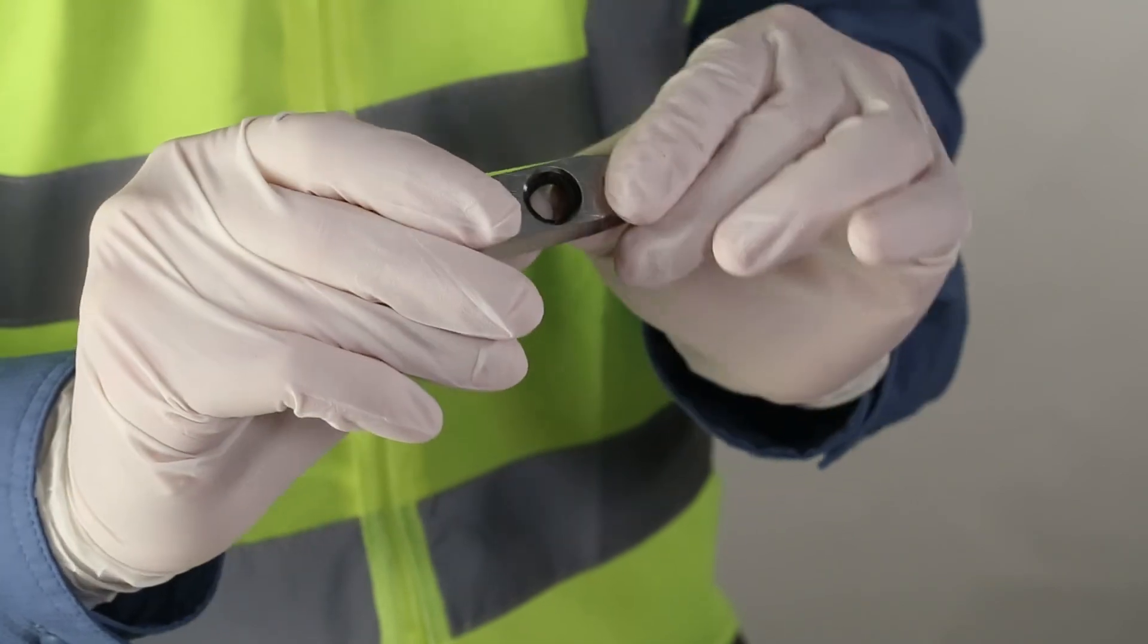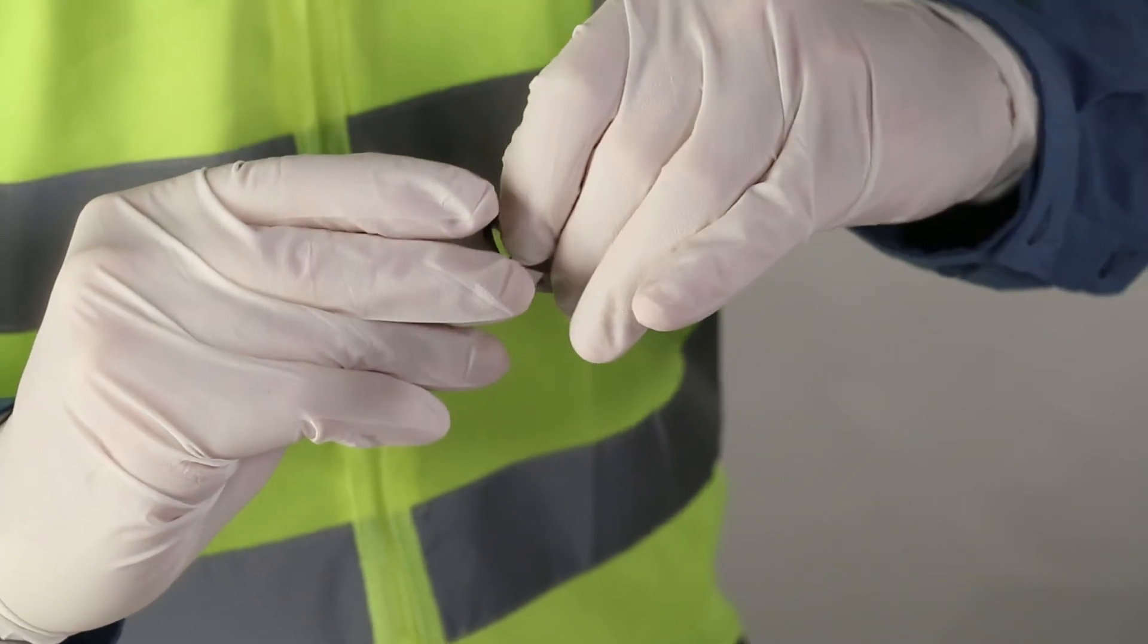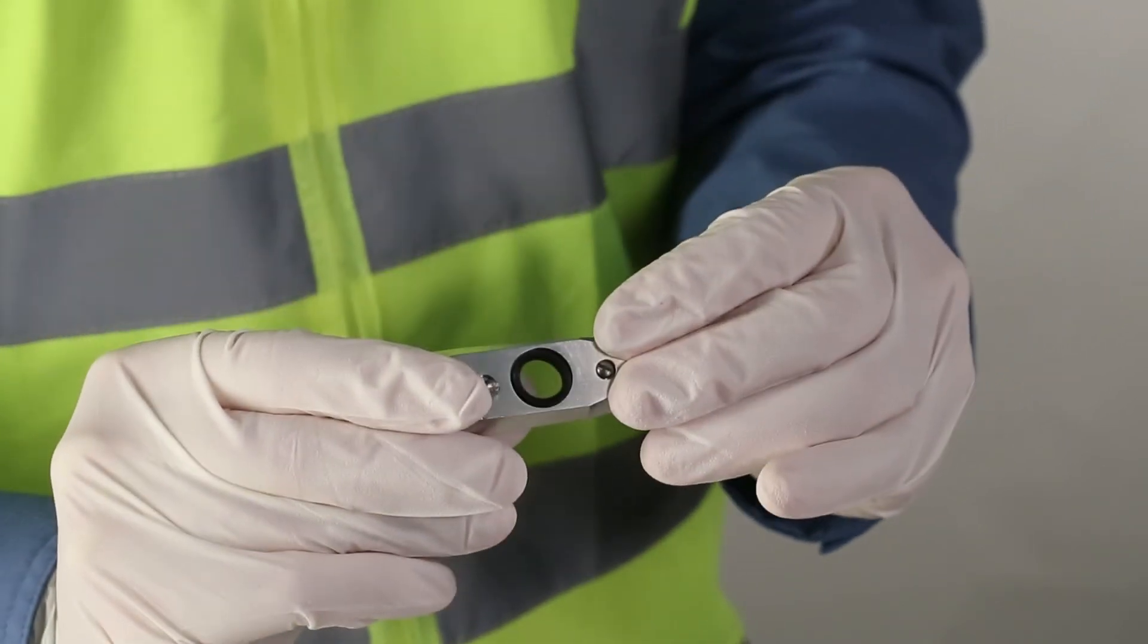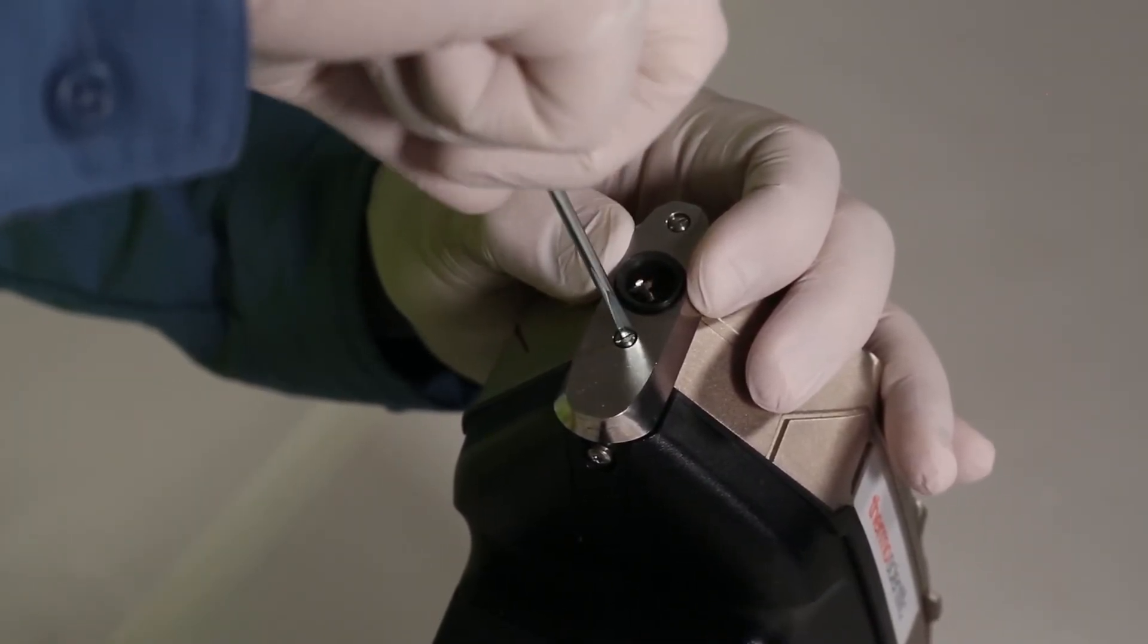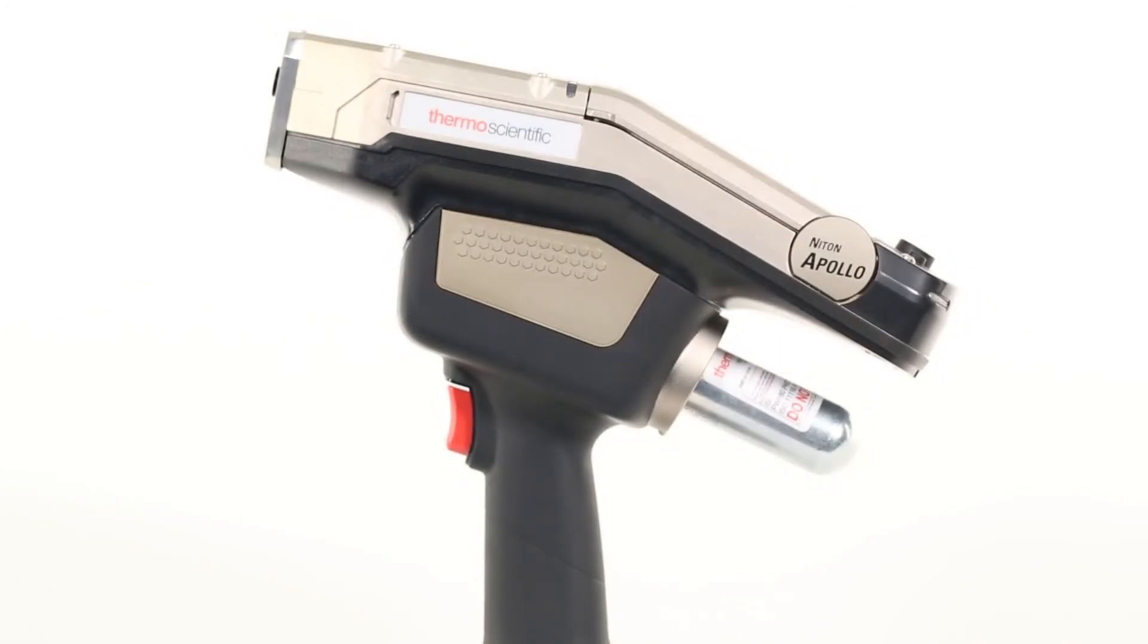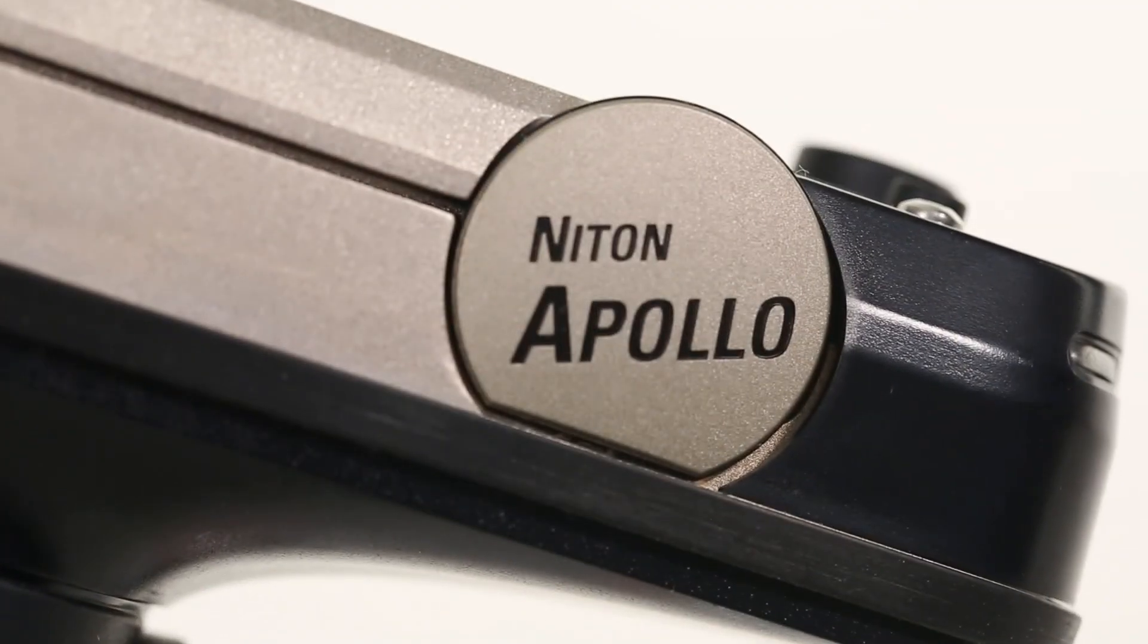If your nose seal appears damaged or frayed, continue by replacing the nose seal. Complete the cleaning procedure by using a flathead screwdriver to securely fasten the nose piece. You have now successfully performed instrument cleaning on the Niton Apollo LIBS Analyzer.